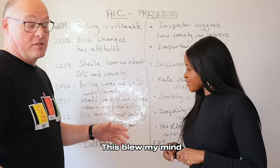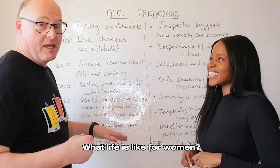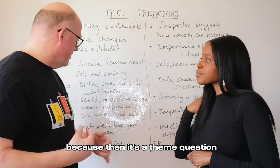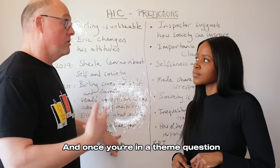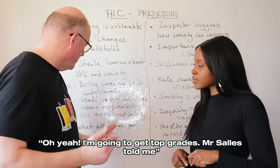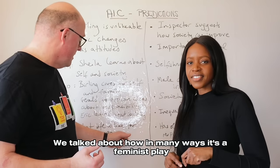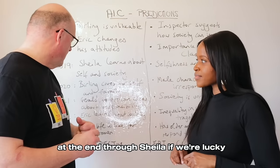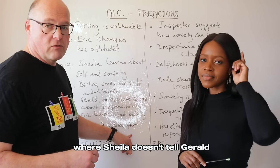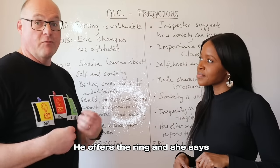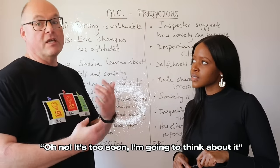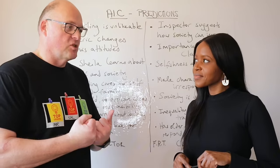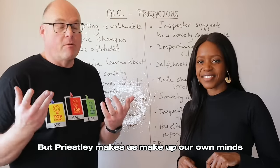Last year's (2023) character question blew minds: it asked about what life is like for women — not naming any specific woman, making it a theme question. Once you're in a theme question you can write about society and get top grades. In many ways Inspector Calls is a feminist play — the women are victims, but Sheila represents those who will make a difference. The ending is also tragic in that Sheila doesn't definitively reject Gerald; she considers the ring rather than refusing outright, leaving the awful possibility that she may have to compromise.